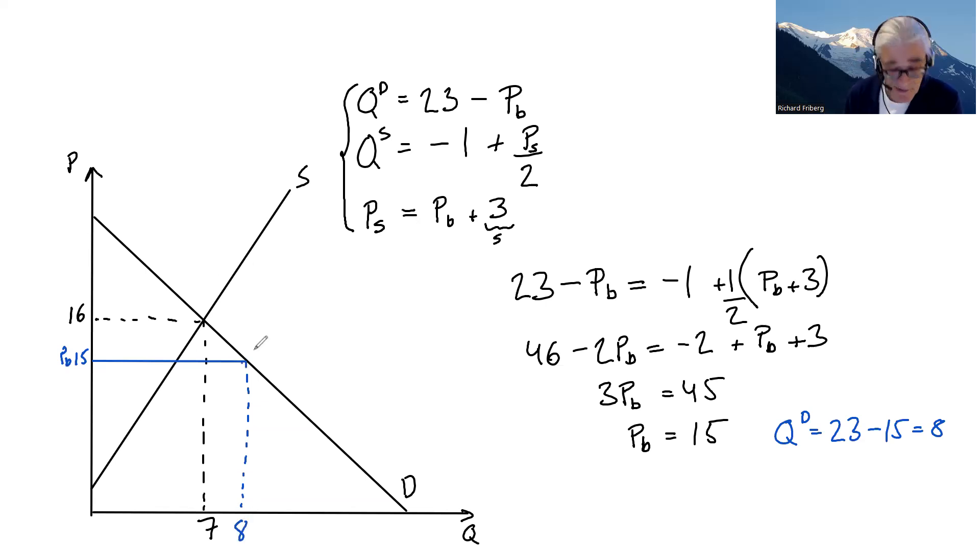What's the price that the suppliers are getting? They're getting the price that buyers are paying, 15, plus the subsidy of 3. Suppliers are getting 15 plus 3 equals 18.